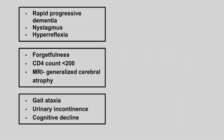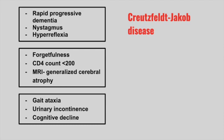Next is a patient with rapidly progressive dementia, nystagmus, and hyperreflexia. This is Creutzfeldt-Jakob disease. This occurs due to a buildup of the 14-3-3 protein inside the brain.